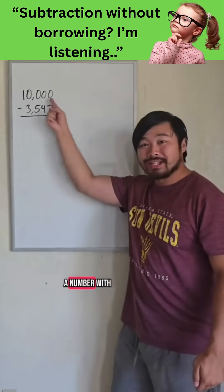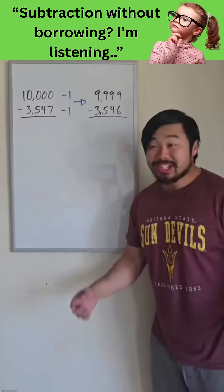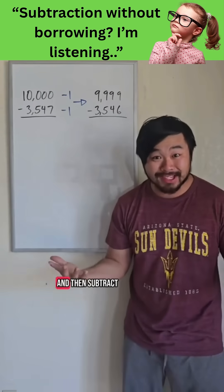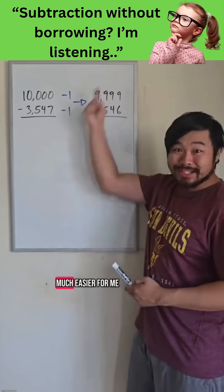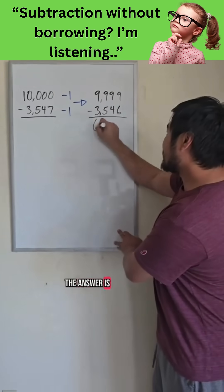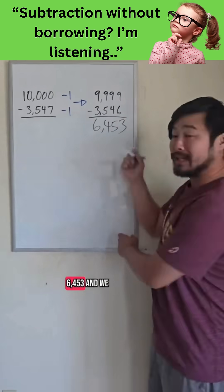Math hack! When subtracting from a number with a lot of zeros at the end, just subtract 1 from both numbers, and then subtract, so you never have to borrow ever again. This is so much easier for me. The answer is 6,453.